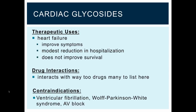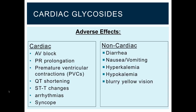Cardiac glycosides are contraindicated in ventricular fibrillation, Wolff-Parkinson-White syndrome, and atrioventricular block. The adverse effects for cardiac glycosides include AV block, PR prolongation, PVCs or premature ventricular contractions, QT shortening, ST changes, arrhythmias, and syncope, as well as non-cardiac effects such as diarrhea, nausea, vomiting, hyperkalemia, hypokalemia, and blurry yellow vision.